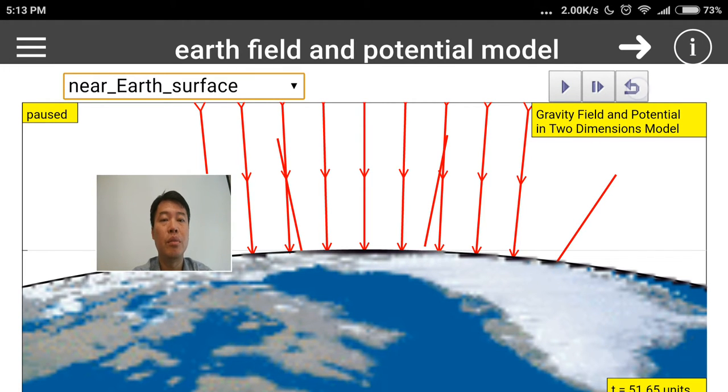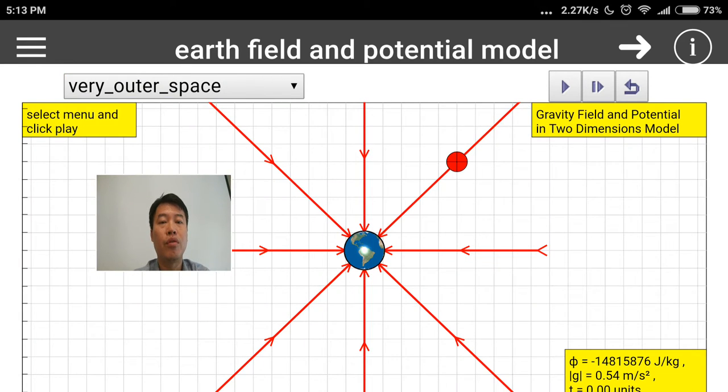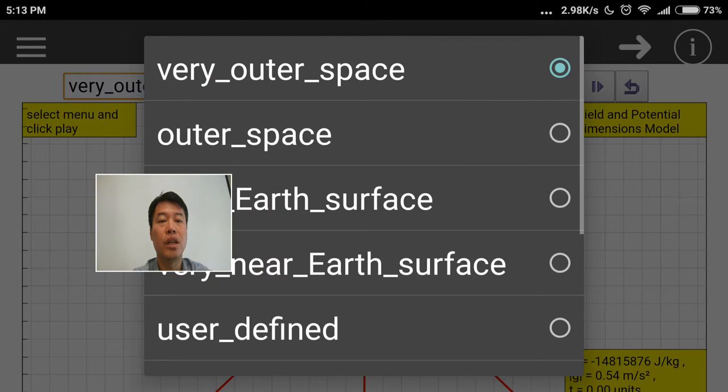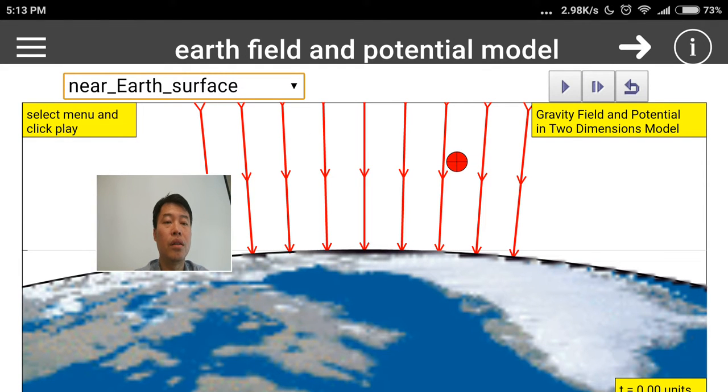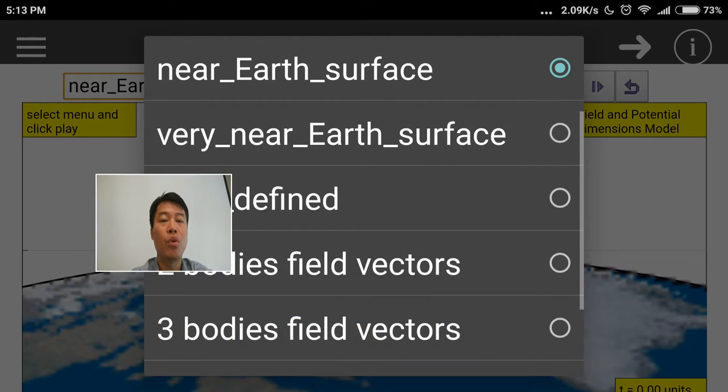We need to reset the simulation before choosing the option because I did not make it such that it will reset. So here in this case, you notice that as you get nearer to the Earth's surface, the field lines start to become more and more uniform.